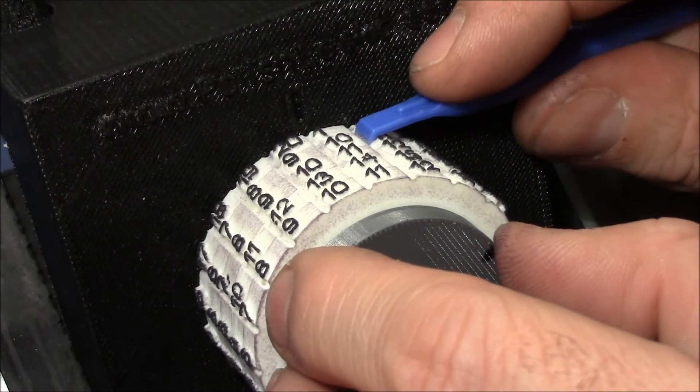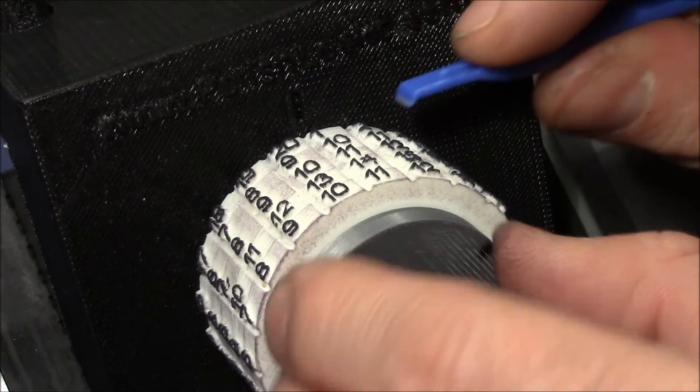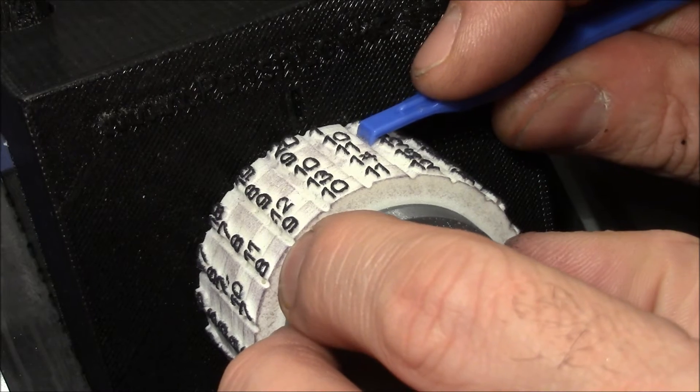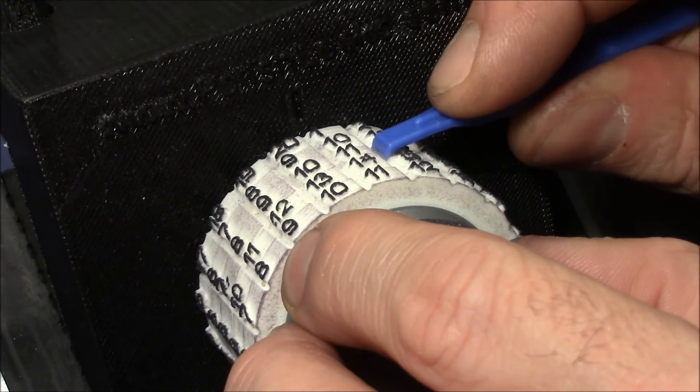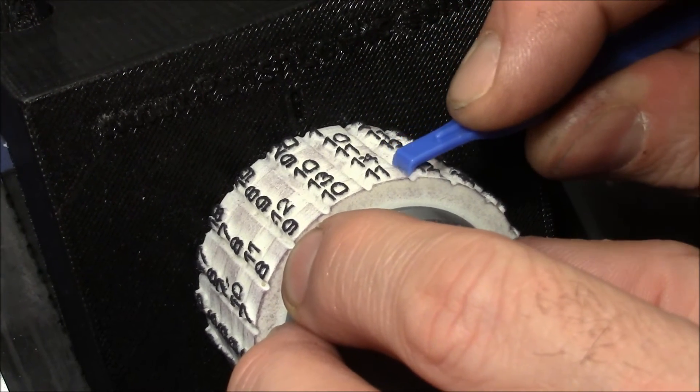So usually you would try to find the binding wheel. So I turn the knob, hold it down. So one wheel should bind the hardest.